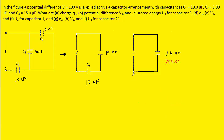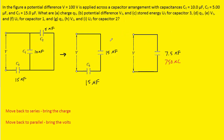Now that we have the total charge, we work our way backwards to the original circuit following two rules. The first rule says that as we move backwards to a series arrangement, we bring the charge with us. So starting from the equivalent capacitor and working back to the two series capacitors, the 750 microcoulombs comes back and is placed on both capacitors.